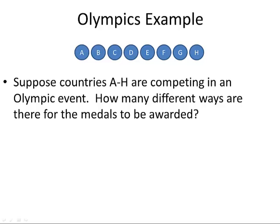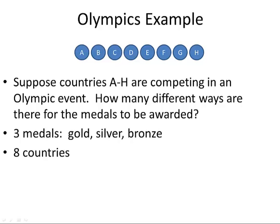We want to know how many different ways there are for the medals to be awarded. There are three medals: gold, which is the best, silver comes next, and bronze is third place. With eight countries, we are taking groups of three out of a pool of size eight, and order matters. We can just plug that into the permutations formula from the previous slide, and we end up with 336 ways.